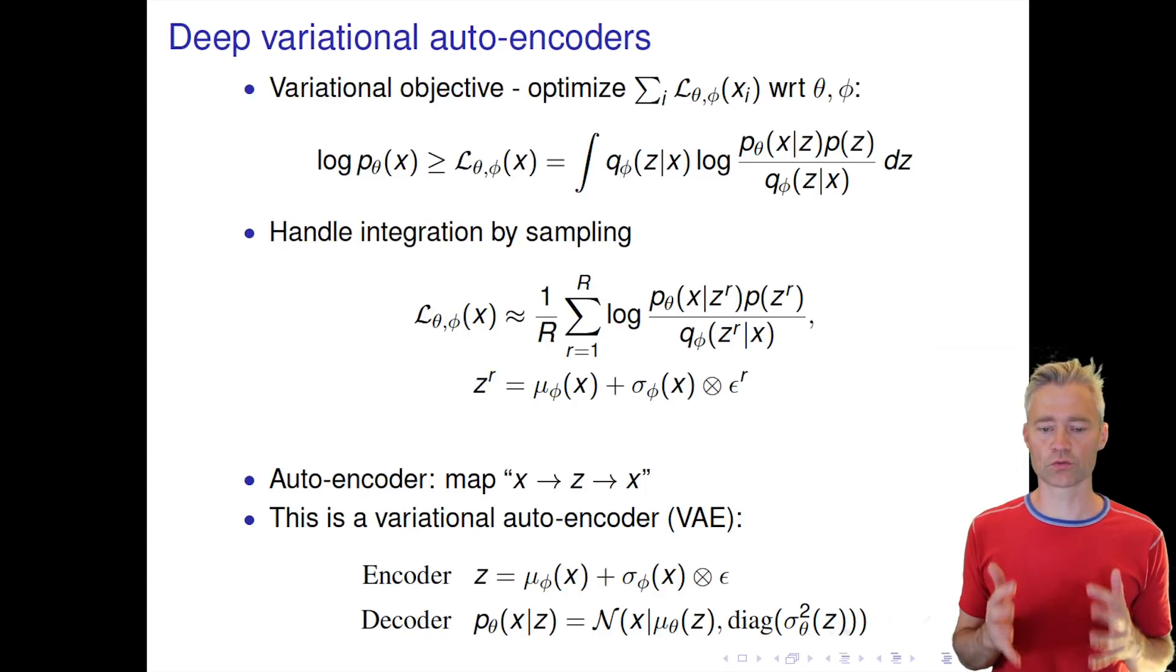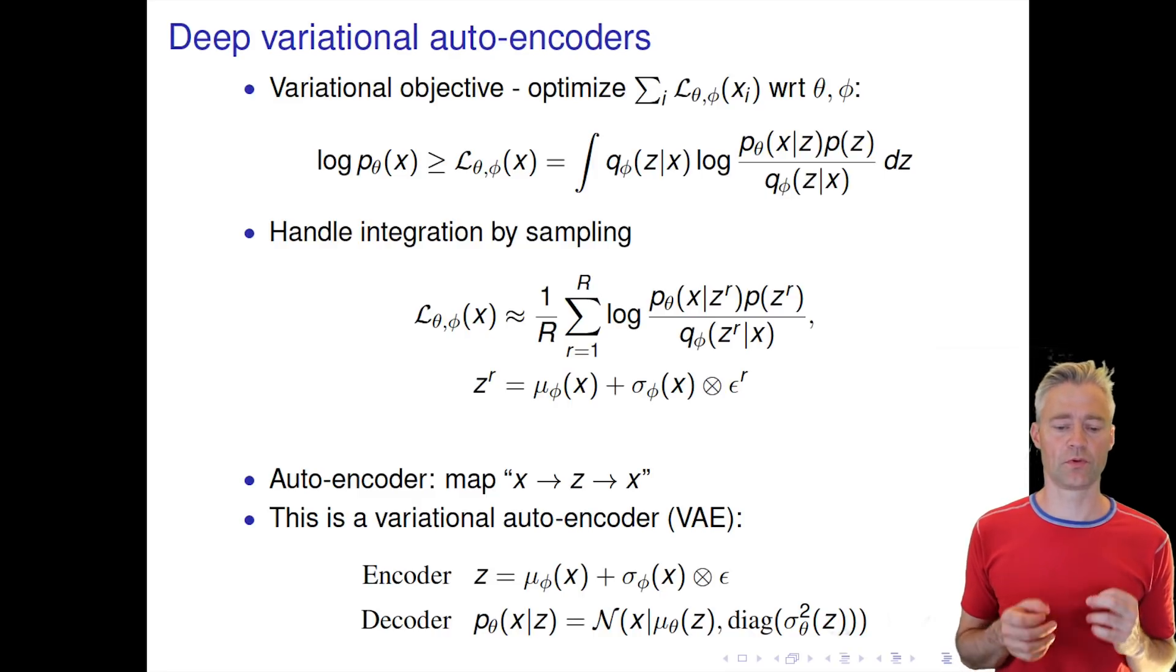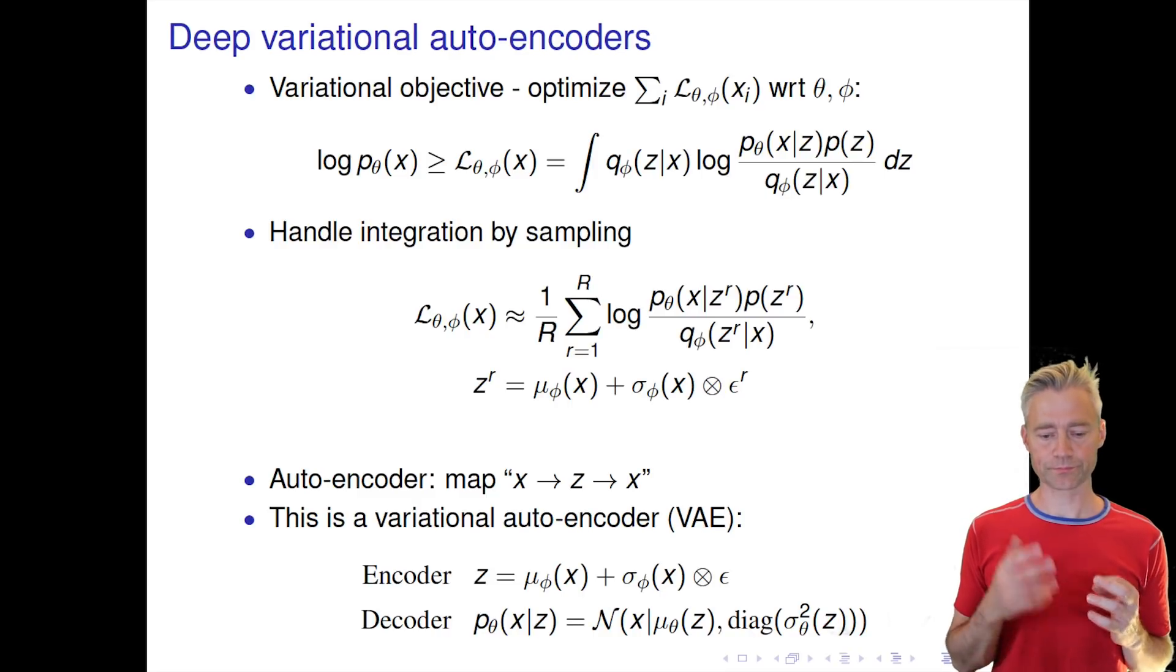So why do we call this an autoencoder? You can see that this is actually also a model that has both an encoder and a decoder, so it maps—in the encoder, the encoder is stochastic because we have a stochastic mapping from x to some latent variable c.